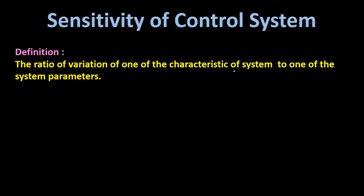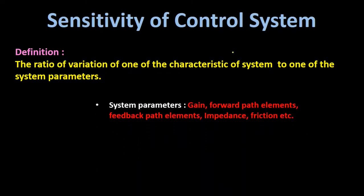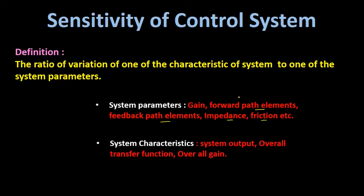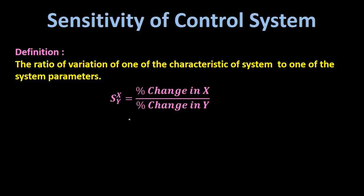Sensitivity is defined as the ratio of variation of one of the characteristics of the system to one of the system parameters. Examples of system parameters are gain, forward path elements, feedback path elements, impedance, friction, etc. Examples of system characteristics are system output, overall transfer function of the system, and overall gain of the system.